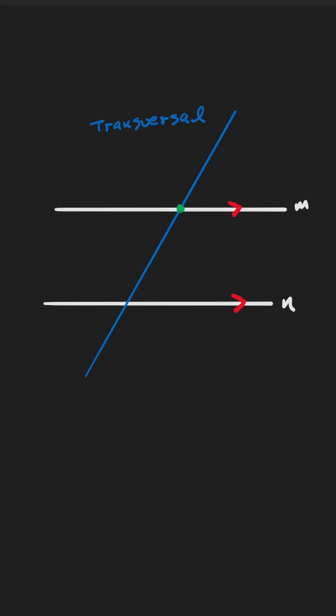Notice that we're intersecting at two different points and we have also created eight different angles. Now why do we build a box around those intersections?